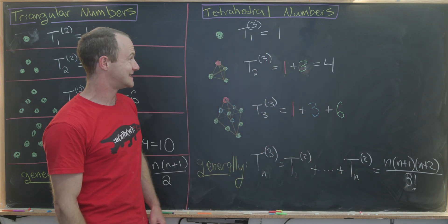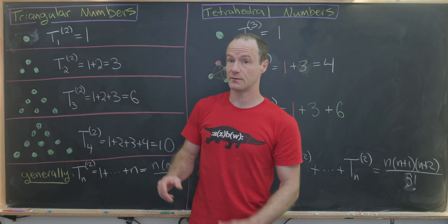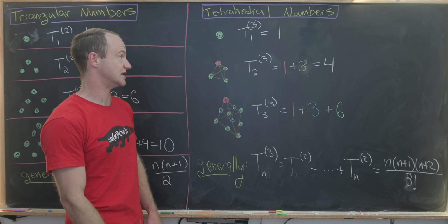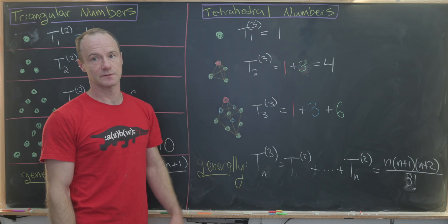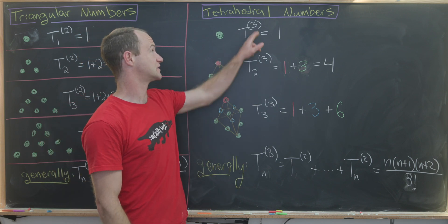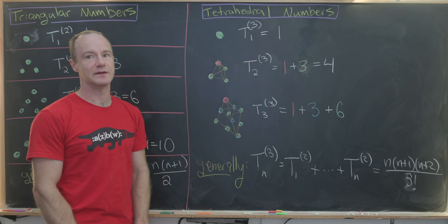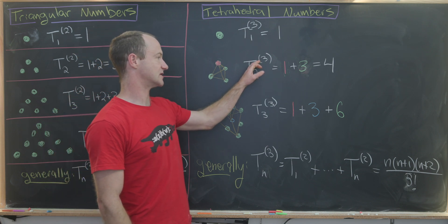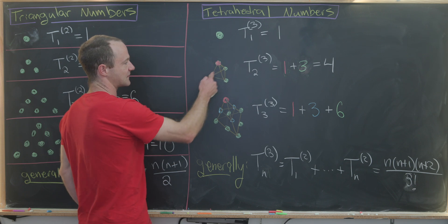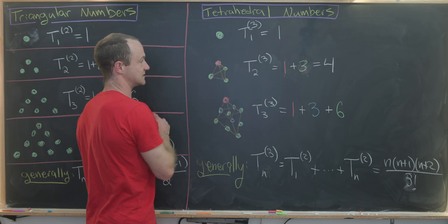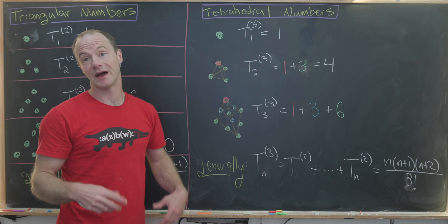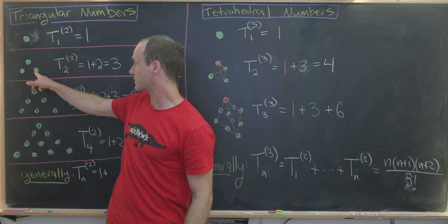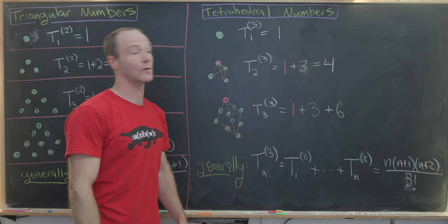From the triangular numbers, I'd like to move to the tetrahedral numbers. If the triangular numbers can be represented by dots in a triangle, then the tetrahedral numbers can be represented by dots in a tetrahedron. One is the first tetrahedral number, using a superscript of three since this is a three-dimensional type of number. The second tetrahedral number is one plus three, or four — we have a triangle at the base with three terms, and a single dot at the apex, which equals the first triangular number plus the second triangular number.